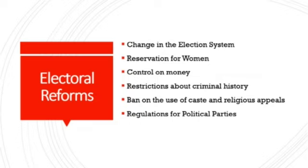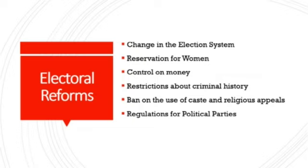Next suggestion is restrictions about criminal history. Some criminals also get seats in Parliament or in state legislative assemblies. Candidates should not be allowed to participate in elections if they have any criminal case or criminal background. Next is a ban on the use of caste and religious appeals — some contestants use religious appeals to the people, which is not a good practice for democracy. There should be a ban on using caste and religious appeals in the campaign. And the next suggestion is regulation for political parties — certain regulations must be set by the election commission for political parties, and there should be a law to keep a check on their functioning.